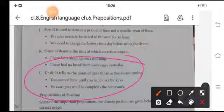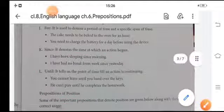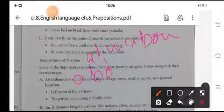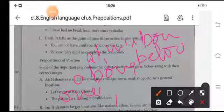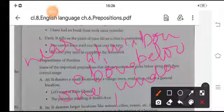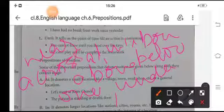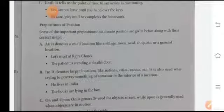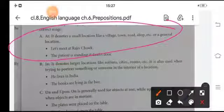Now, preposition of position, the second point. The words like at, in, upon, above, below, over, under, near, across. These are the prepositions of position. At is denoted when a location like village, town, road, shop, etc. When we talk about this, road, shop, town, village, at.